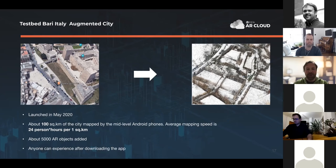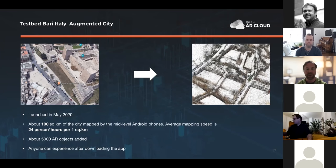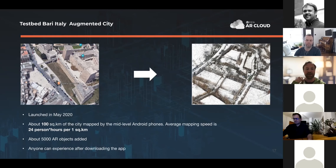I'll tell you a few words about our testbed in Bari, Italy. It is our biggest testbed, with more than 100 square kilometers covered by 3D maps, fully connected to the GeoPose server and SDS server. It took us just a couple of months to map the whole city using regular mobile phones — the average speed is about 24 hours per one square kilometer. We placed about 5,000 objects in different parts of the city.